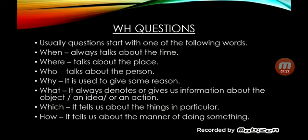WHAT always denotes or gives us information about an object, an idea, or an action. For example: 'What is she eating?' or 'What is your plan?' Our next question word is WHICH. It tells us about things in particular. For example: 'Which is your favourite food?' Our last WH question is HOW. It tells us about the manner or the method of doing something. For example: 'How do you go to school?' or 'How are you?' So, these all are WH questions. I hope the concept of WH questions is also clear. Thank you.